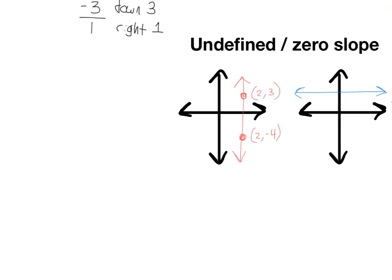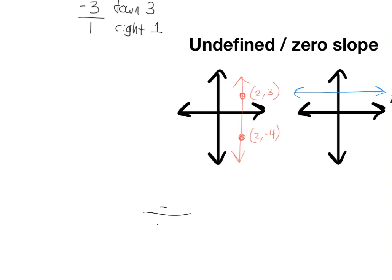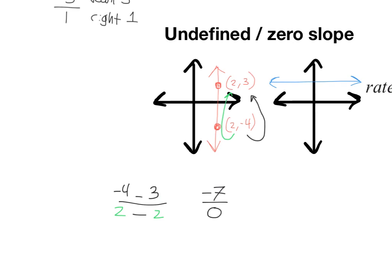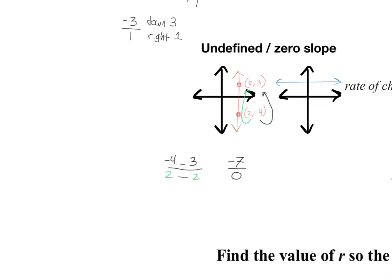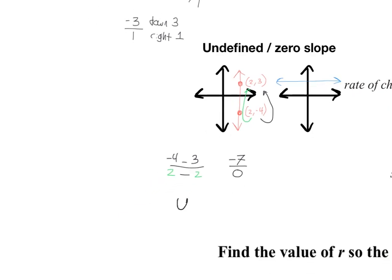And if we go and use the formula on that, and do negative 4 subtract 3 over top of 2 subtract 2, what we will get is a negative 7 divided by zero. And anytime you try to use the slope formula on a vertical line, a line that runs up and down, you will get zero in the denominator, which gives us an answer of undefined.